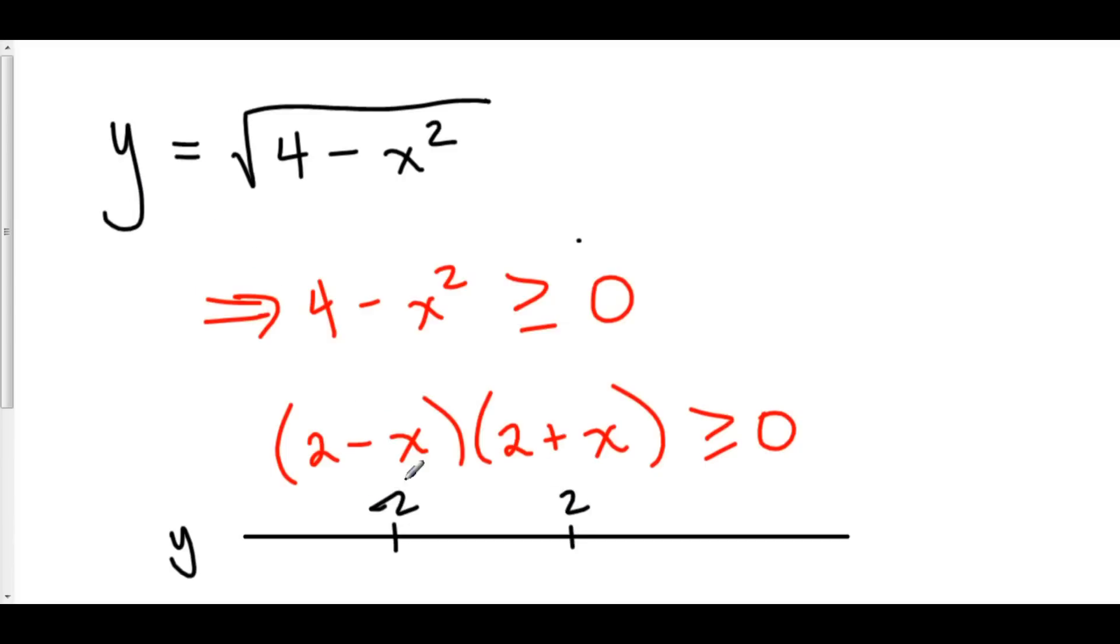Now, we can look to the left of negative 2 and see what's happening to y, or 4 minus x squared, really. So, instead of y, I'm going to call this 4 minus x squared. So, to the left of negative 2, let's plug, for example, negative 3 in. 2 minus negative 3 is positive. 2 plus negative 3 is negative. So, to the left of negative 2, 4 minus x squared is negative. This is bad.